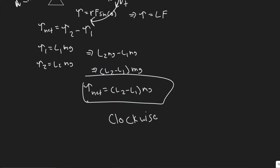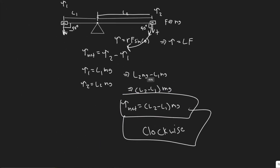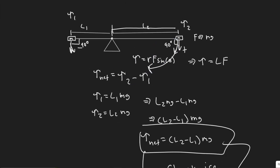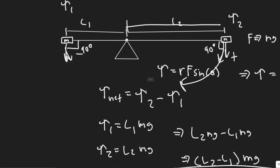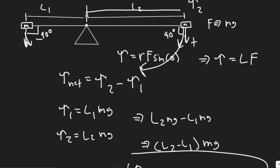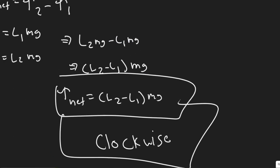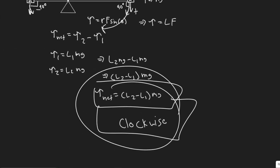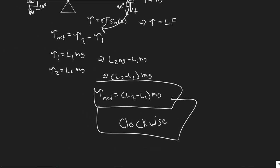So those are your answers for magnitude and direction. Quick rundown: you just add up the torques, making T1 negative since it acts counterclockwise, then plug in the formula and solve. It's really that simple. Hopefully you found this video useful.